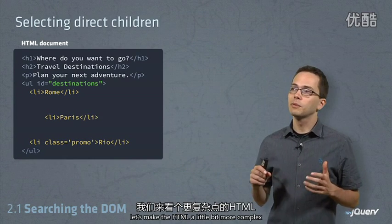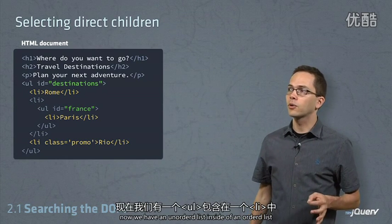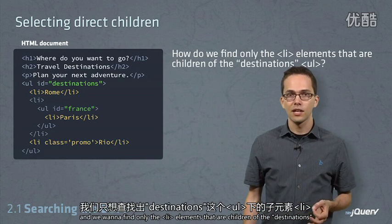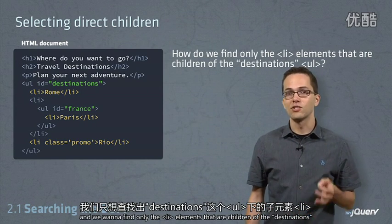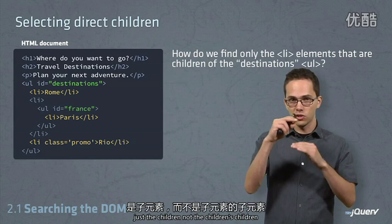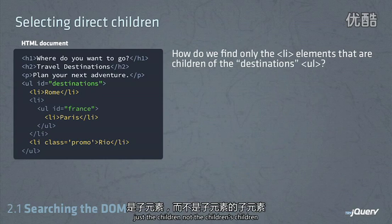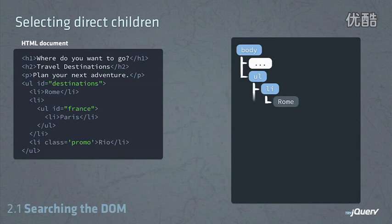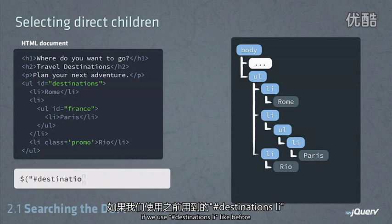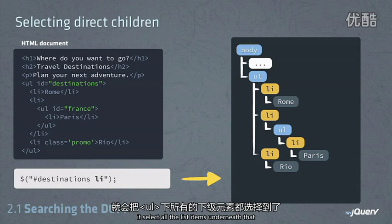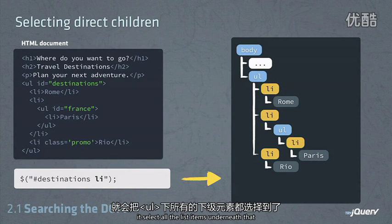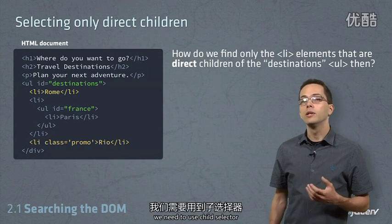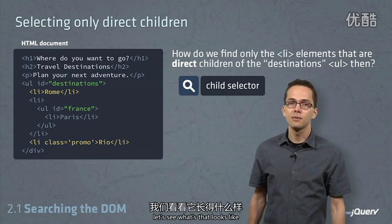Let's make our HTML a little bit more complex. Now we have an unordered list inside of our unordered list, and we want to find only the li elements that are children of the destination's ul — just the children, not the children's children. If we use #destinations li like before, it selects all of the list items underneath that ul, which is not what we want. In order to find only the direct children, we need to use the child selector.